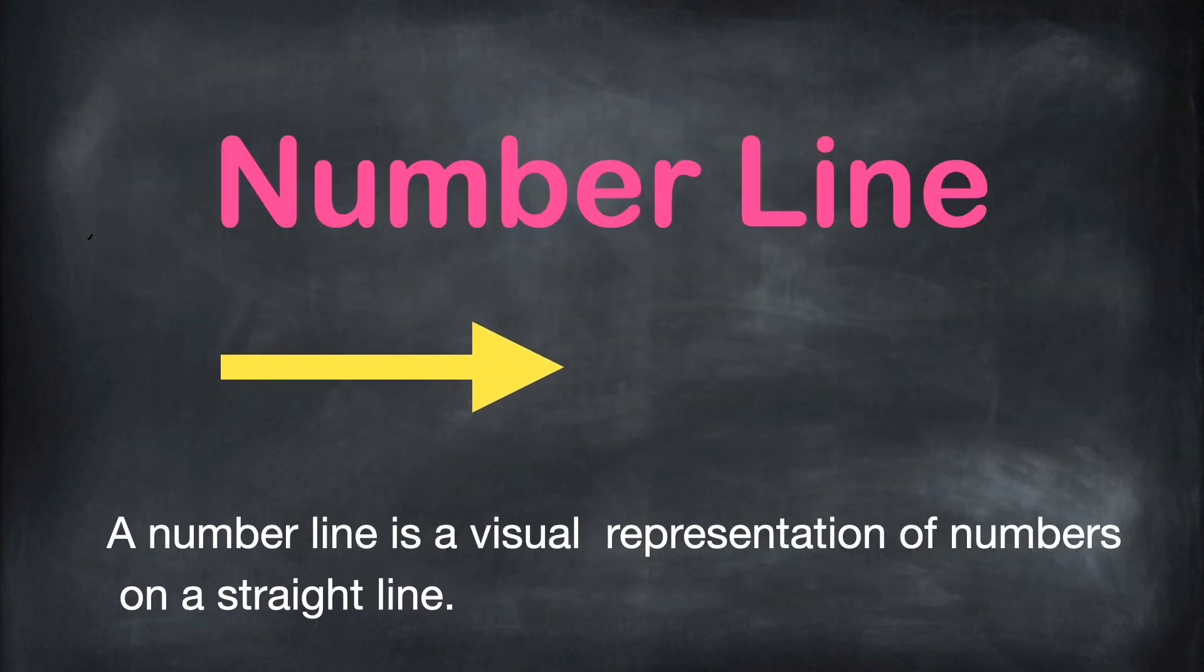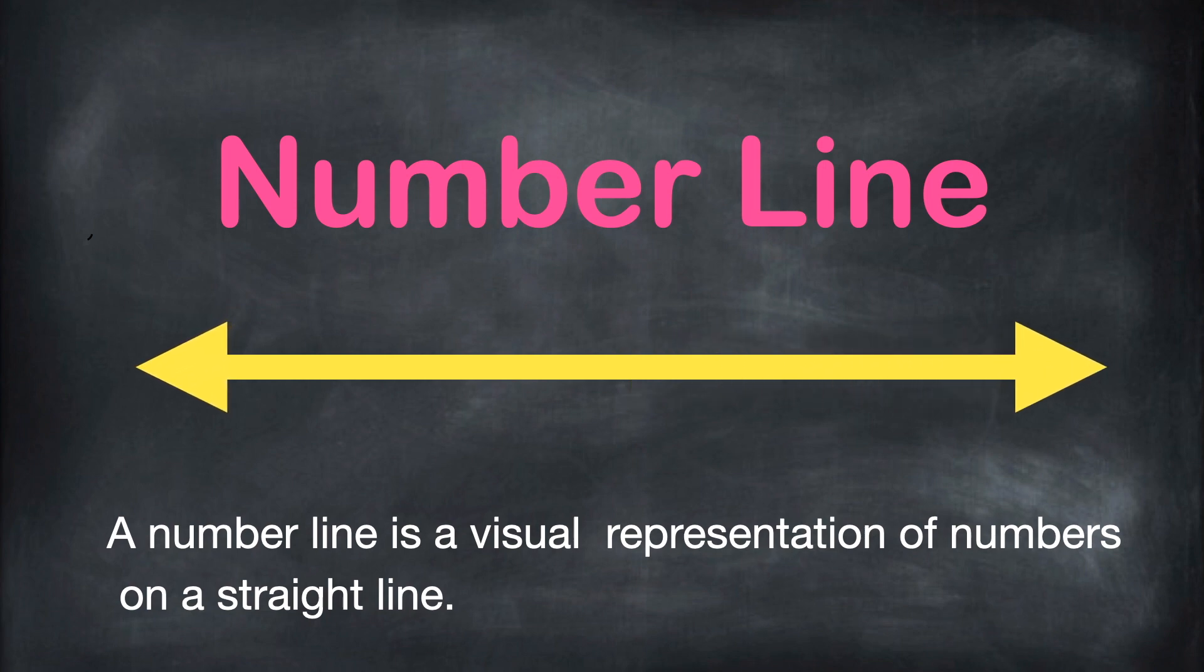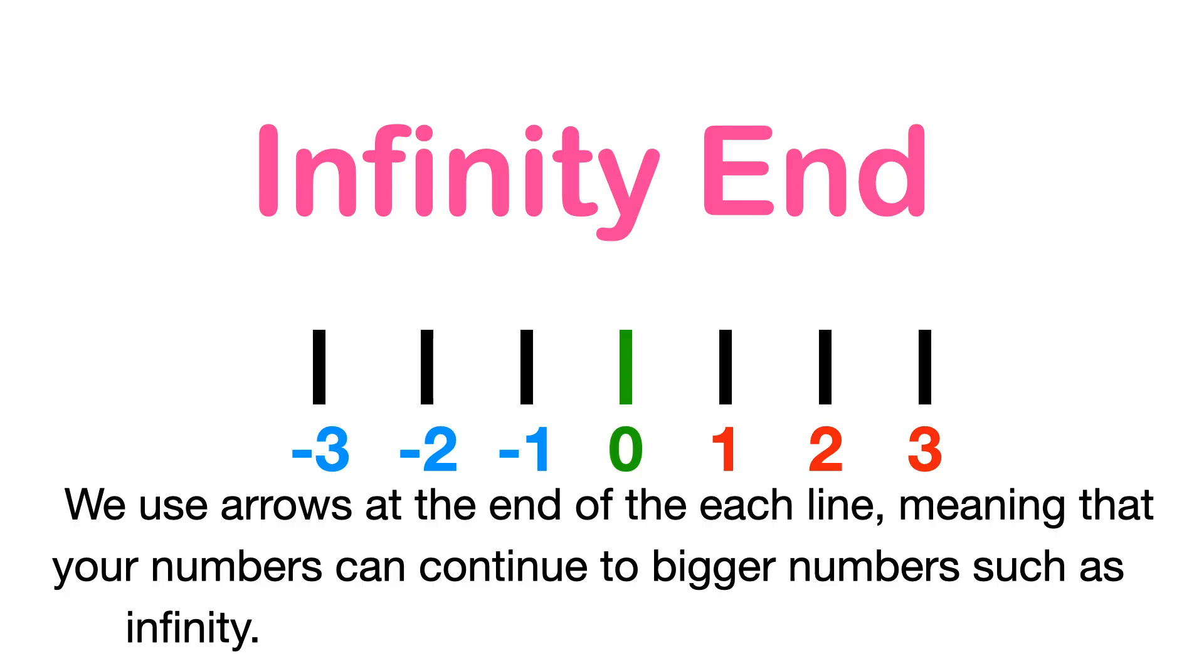A number line is a visual representation of numbers on a straight line. We use arrows at the end of each line, meaning that the numbers can continue to bigger numbers, such as infinity.